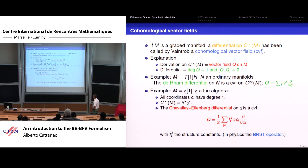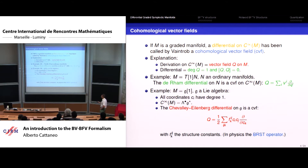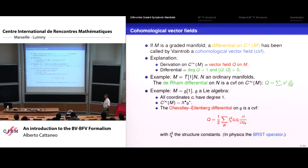Going back to the odd tangent bundle, there we have a canonical cohomological vector field which is just the de Rham differential. It is the differential of the algebra of differential forms, and you can write it in local coordinates by this expression, where Q_i are coordinates on the base and V_i are coordinates on the tangent fiber. Another example is that of a Lie algebra: start with a Lie algebra G and shift it by one, so basis elements are declared odd and of degree one. The algebra of functions is the exterior algebra of the dual of the Lie algebra, and the natural differential is the Chevalley-Eilenberg differential. In physics this is called the BRST operator.